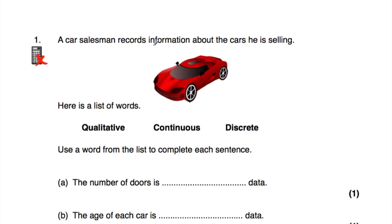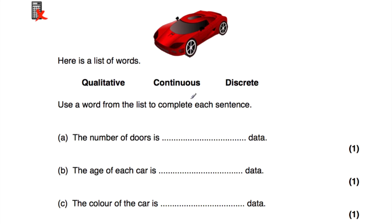Question number one: a car salesman records information about the cars he is selling. Here's a list of words — qualitative, continuous, and discrete — and we need to use a word from the list to complete each sentence. The number of doors is what type of data? Qualitative data is more like qualities such as colours. Discrete data can only take certain values. Since the number of doors is one door, two doors, three doors and so on, the answer is discrete data.